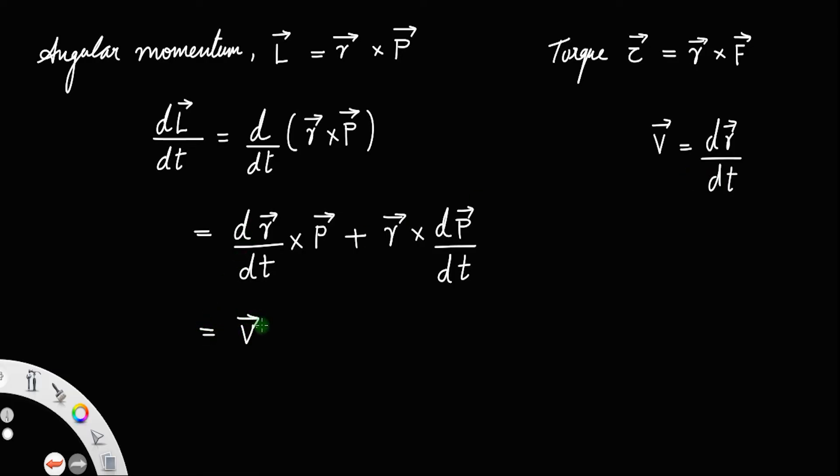V cross P plus R cross, then what about dP by dt? You know from Newton's second law we have force is equal to rate of change of momentum dP by dt. So R cross F.